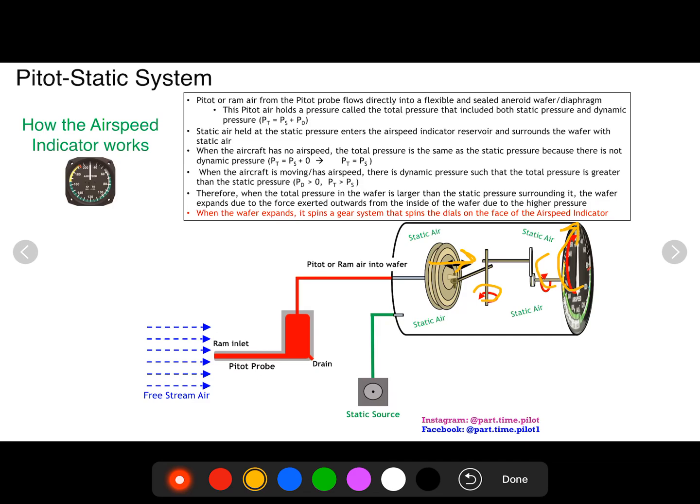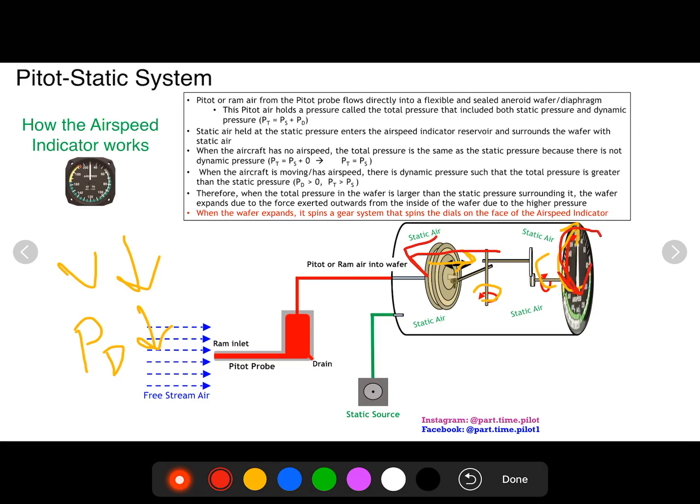So when you speed up, velocity goes up, your dynamic pressure goes up, and your wafer expands and your airspeed goes up. When velocity goes down, dynamic pressure goes down, and your wafer is going to contract back and your airspeed dial is going to go back down. And that is pretty much it.